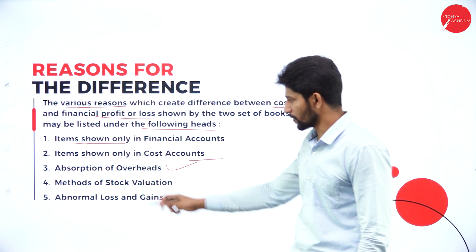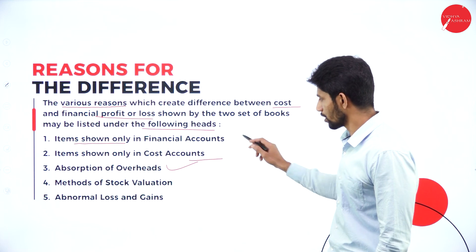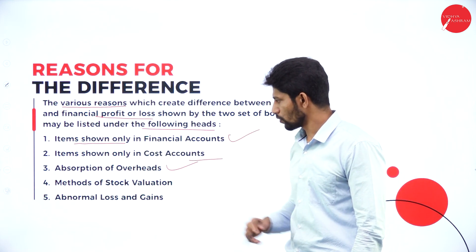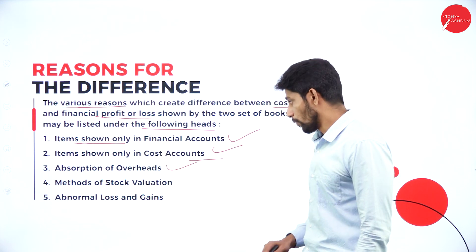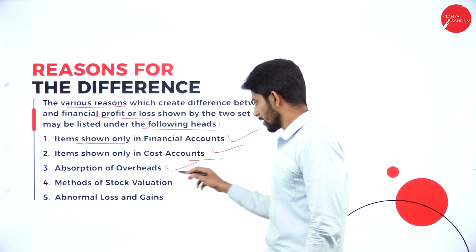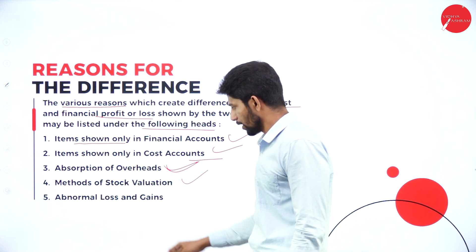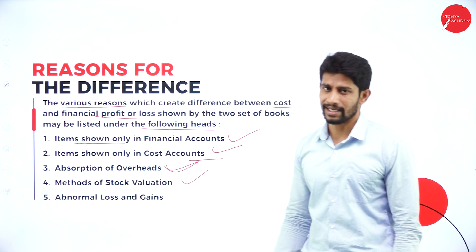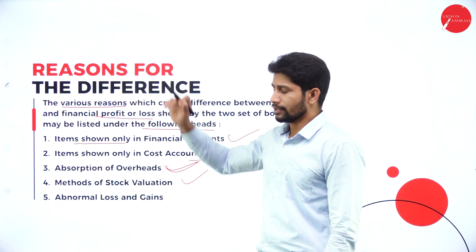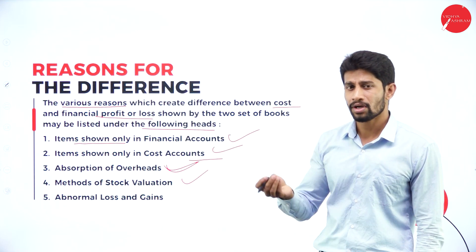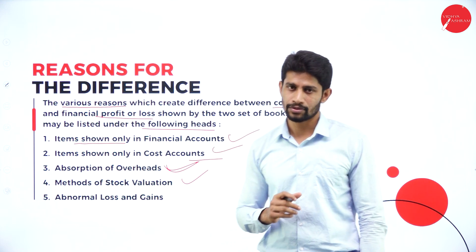The fifth reason is abnormal losses and gains. Because of abnormal losses and gains recorded differently in each book — financial book as well as cost book — you may see the difference in profit. So these are the five reasons why the financial book and the cost book show a difference in profit or loss: items shown only in financial accounts, items shown only in cost accounts, absorption of overhead, methods of stock valuation, and abnormal losses and gains.